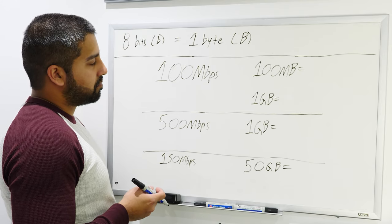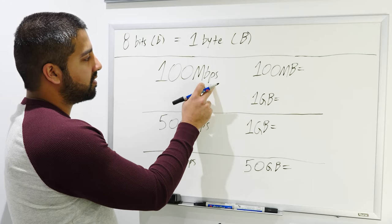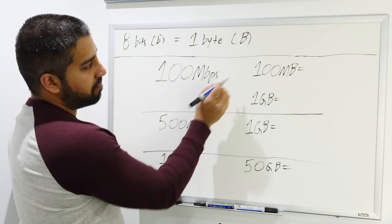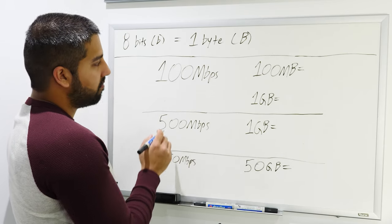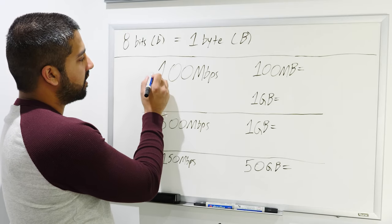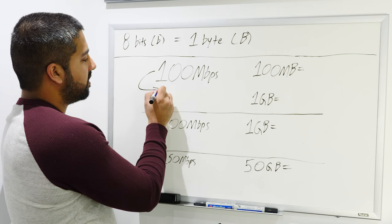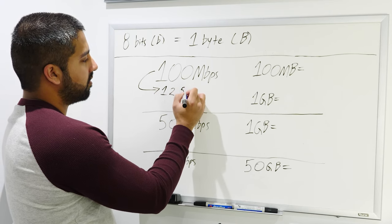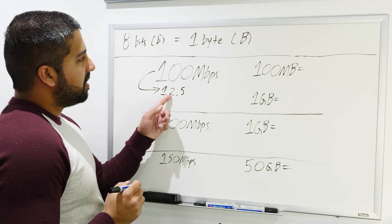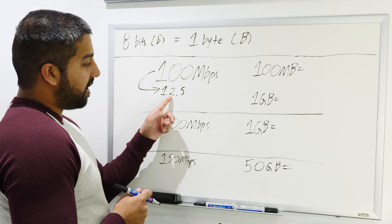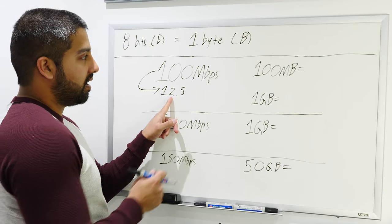It takes eight bits to equal one byte. Well, let's start with this one right here. Let's pretend you have a hypothetical download speed at home of 100 megabits per second. Well, you want to know how long does it take you to download 100 megabyte file or one gigabyte file? Well, it's simple. Let's start first by taking 100 megabits per second and divide by eight, and that gives us 12.5.